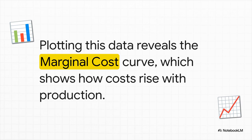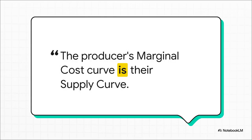The marginal cost curve is a picture that shows: the more I make, the more it costs to make the next one. And here's the big reveal — the most important takeaway: a producer's marginal cost curve IS their supply curve. They are one and the same. A smart producer is only willing to sell one more unit if the market price is at least as high as what it costs them to make it. The cost dictates the supply. It's that direct.